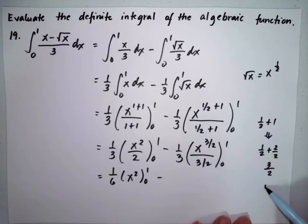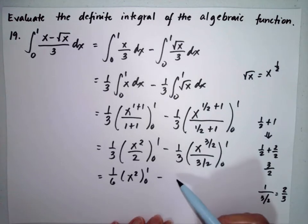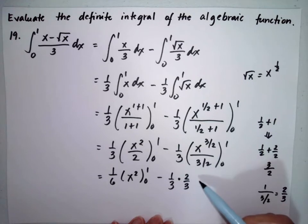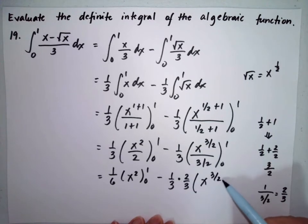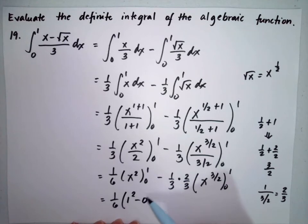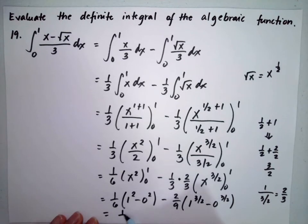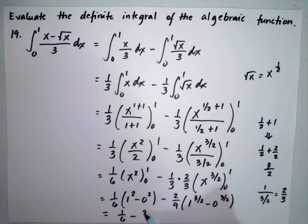If you have 1 over 3/2, this can be simplified as 2/3. So this will be 1/3 multiplied by 2/3, which comes from the 3/2, giving x to the 3/2 from 0 to 1. So this will be 1/6 times (1 squared minus 0 squared), minus 2/9 times (1 to the 3/2 minus 0 to the 3/2). This gives us 1/6 minus 2/9.